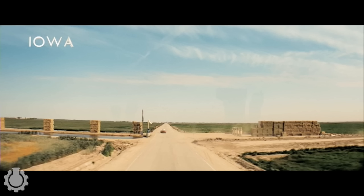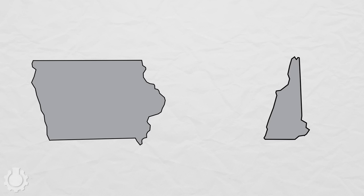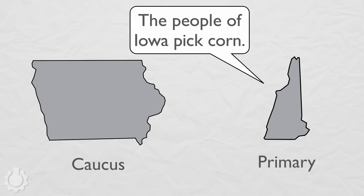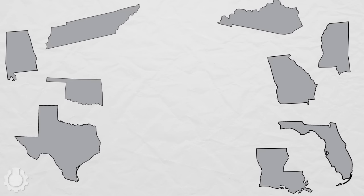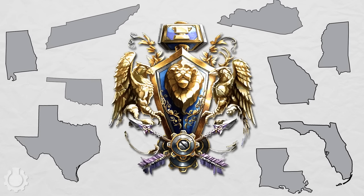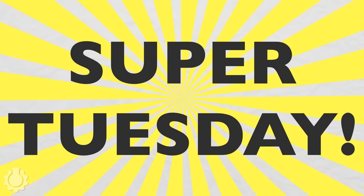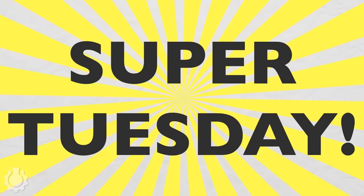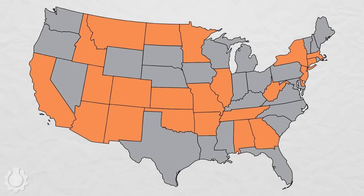You might ask: doesn't Iowa already go first? Yes, but New Hampshire lets them get away with it for two reasons. First, Iowa's election is a caucus, so New Hampshire is still technically the first primary. And second, New Hampshire thinks that Iowa is stupid and doesn't matter. Other states try to boost their influence not by cutting in line, but by forming an alliance and holding their primaries at the same time. The biggest alliance of the election cycle is called Super Tuesday, where around half of the states might participate, giving out a whole pile of votes.